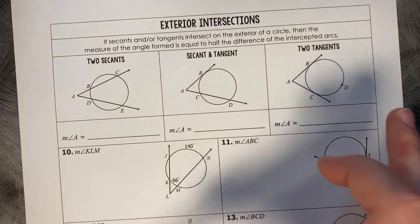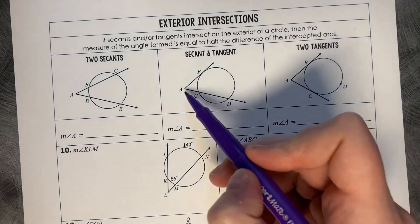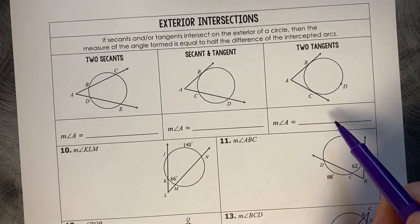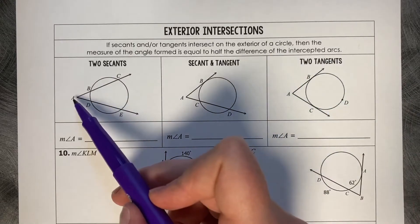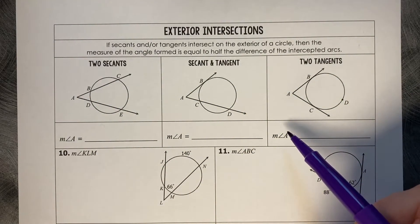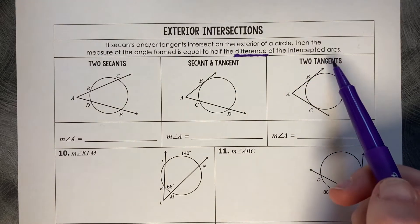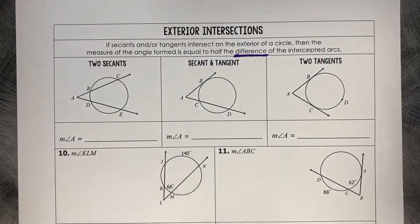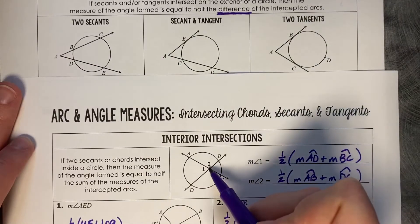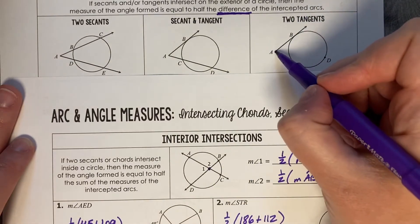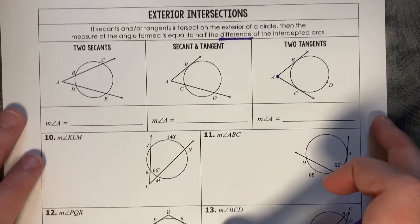Let's look at exterior intersections. These can have two lines through the circle, one tangent and one through, or two tangent lines. If secants and/or tangents intersect on the exterior of the circle, the measure of the angle formed equals half the difference of the intercepted arcs — different from the interior case. Interior is sum; exterior is subtraction.